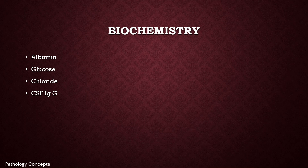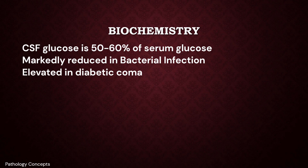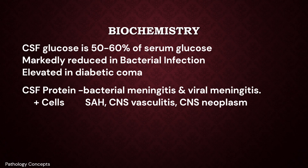Biochemistry tests performed on CSF include protein, glucose, chloride, and CSF IgG. CSF glucose is 50 to 60 percent of serum glucose — it is markedly reduced in bacterial meningitis and elevated in diabetic coma. CSF protein levels are usually elevated in bacterial meningitis and to a lesser degree in viral meningitis, along with increased cell count. Increased CSF protein and increased cell count are also seen in subarachnoid hemorrhage, CNS vasculitis, and CNS neoplasm.